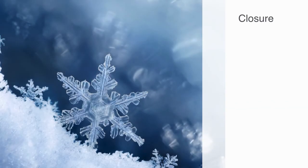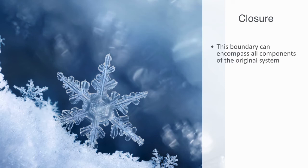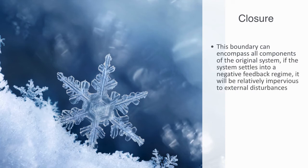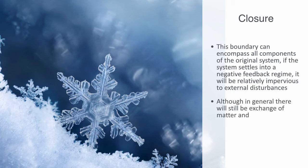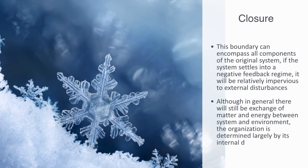For the outside observer, closure determines a clear distinction between inside and outside, and therefore a boundary separating system from environment. This boundary can encompass all components of the original system. If the system settles into a negative feedback regime, it will be relatively impervious to external perturbations. The system has now become responsible for its own maintenance, and thus become largely independent from its environment. It is thus also closed against influences from the outside. Although in general there will still be exchanges of matter and energy between the system and environment, the organization is determined largely by its initial dynamics. Thus we may say that the system is at this stage thermodynamically open, but organizationally closed.